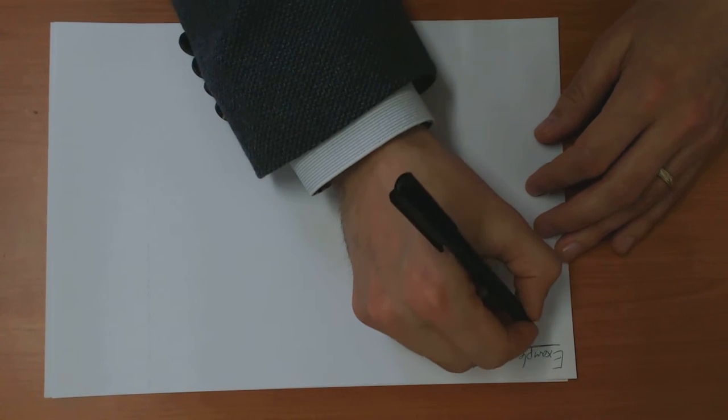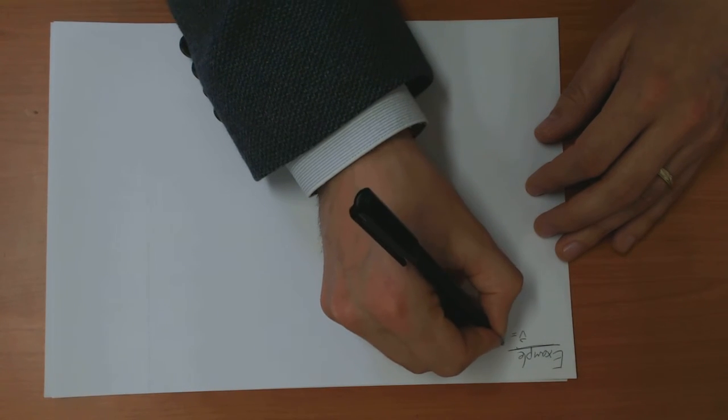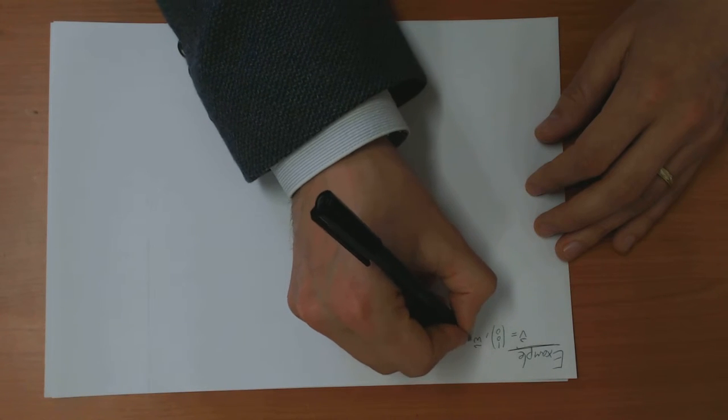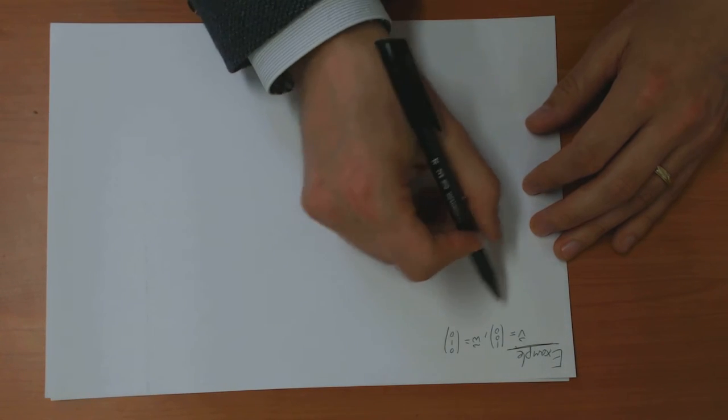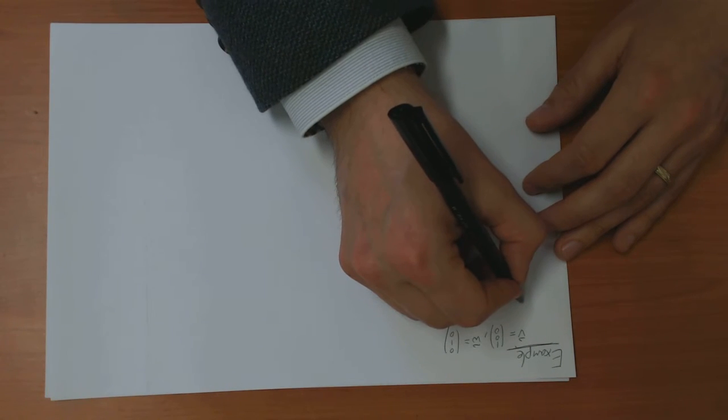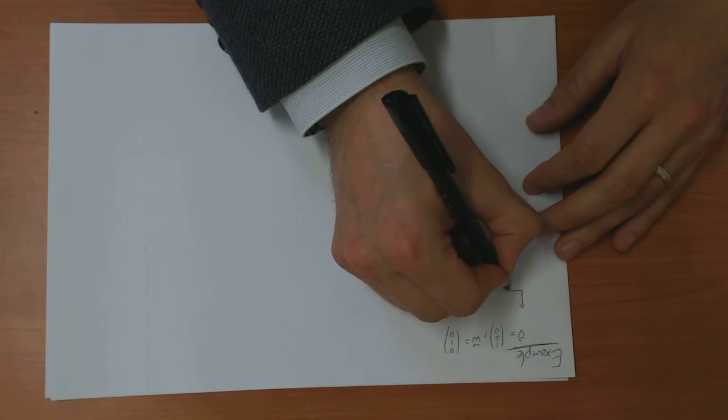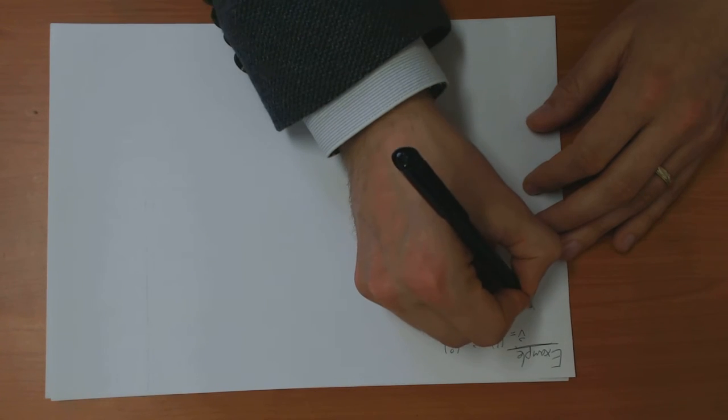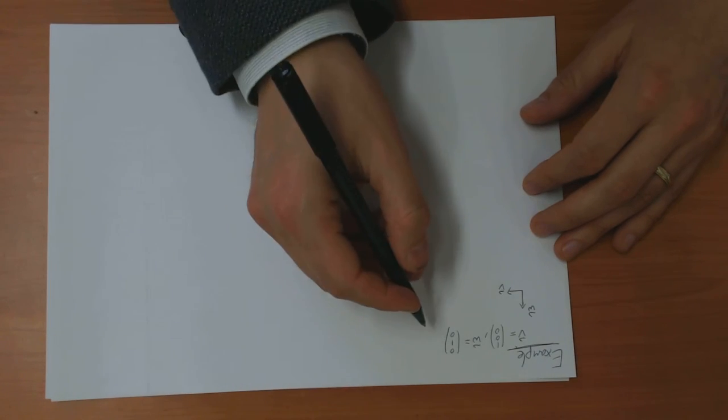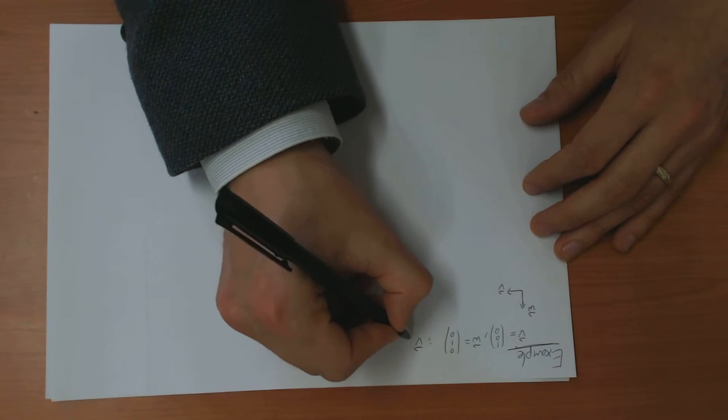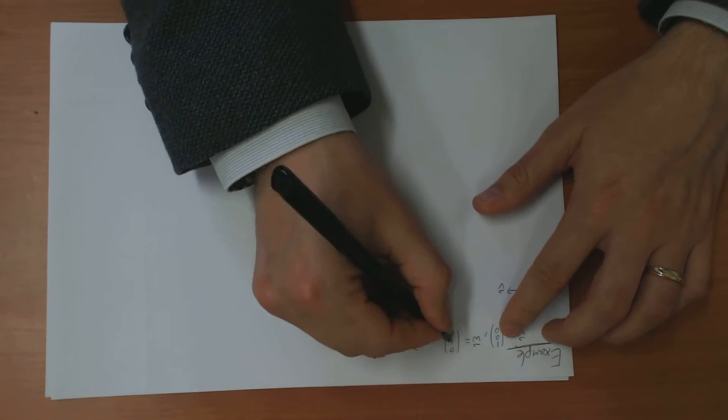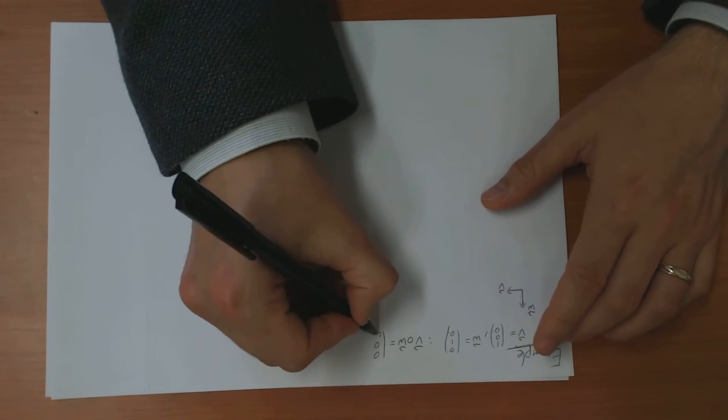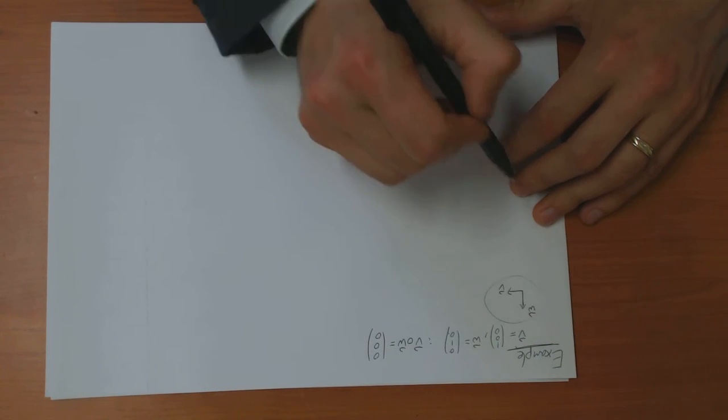So I'm going to take a very simple example of this. I'm going to start with the vector V, which is (1, 0, 0), and W, which is (0, 1, 0). So in the XY plane. So if I draw them like this, this is V, this is W. And according to my circle product, V circle W is this times this, which is 0, this times this, which is 0, and this times this, which is 0. So I get the answer 0 in this case.